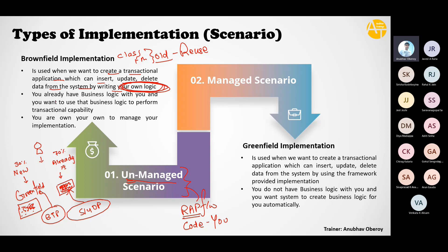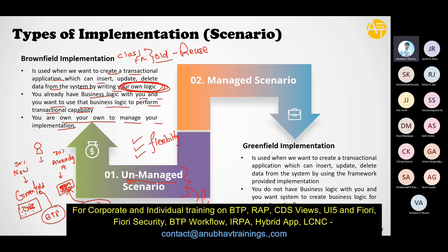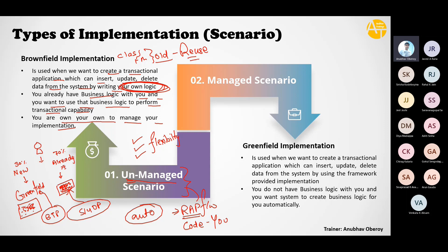In the unmanaged scenario, you have already some business logic and you want to use that business logic to perform transactional capability — there is already something you want to reuse. You are on your own to manage your implementation; all the code you need to do yourself. This gives a lot of flexibility to you. You can write your own code, but it is not recommended because then you are not leveraging the framework to its full potential. The use of a framework is to auto-generate most of the code.